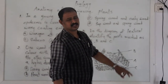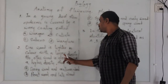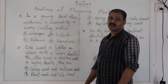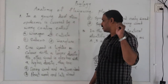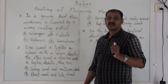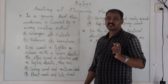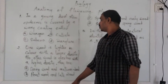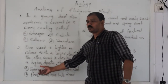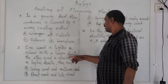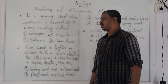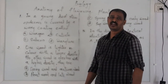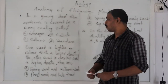Option A is spring wood and autumn wood. In the spring season, growth and cell division is very rapid, so it is called spring wood, and the darker wood with higher density is called autumn wood. The correct answer is option A: spring wood and autumn wood.